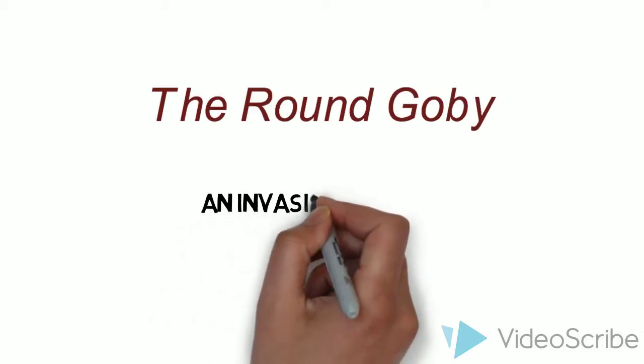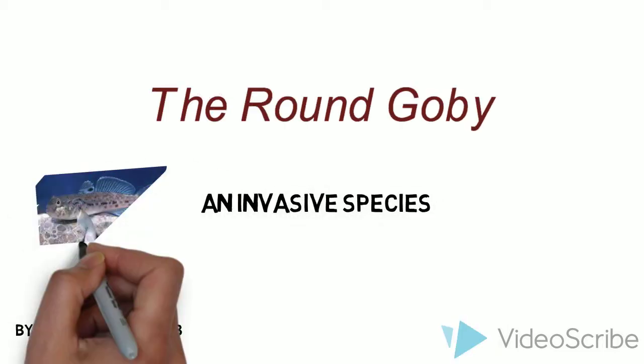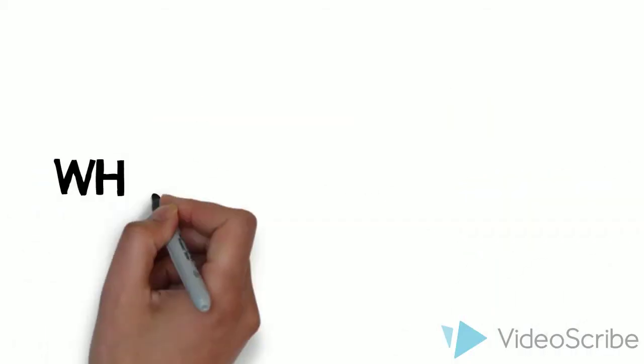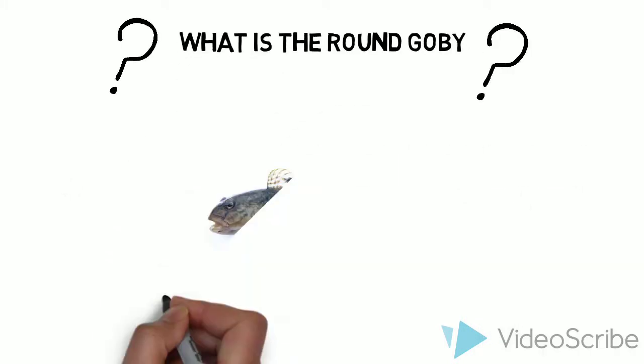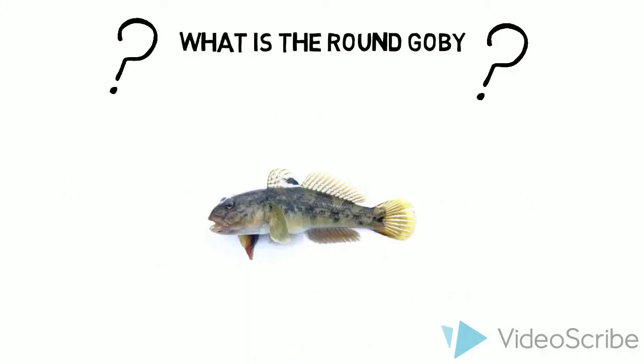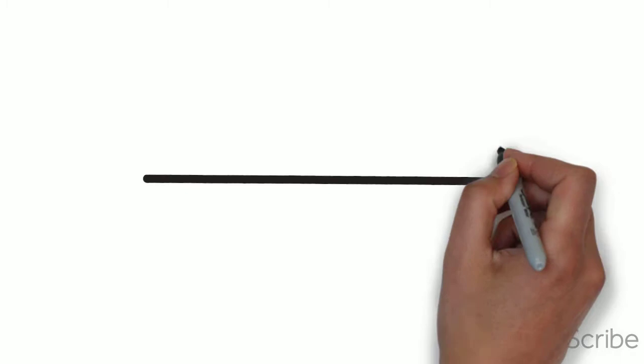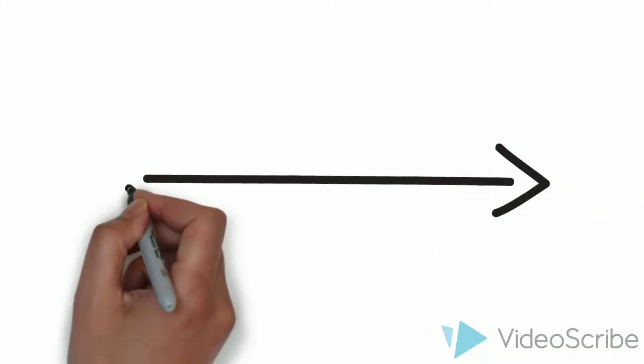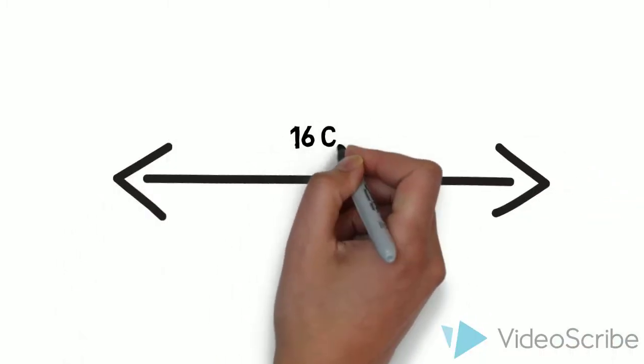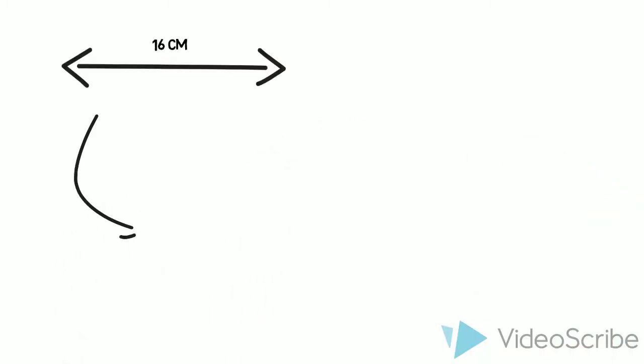The Round Gobi — an invasive species. What is the Round Gobi? The Round Gobi is a fish that is around 16cm long and looks a lot like many other species of fish. It is covered in scales and is brown in color with dark olive spots.